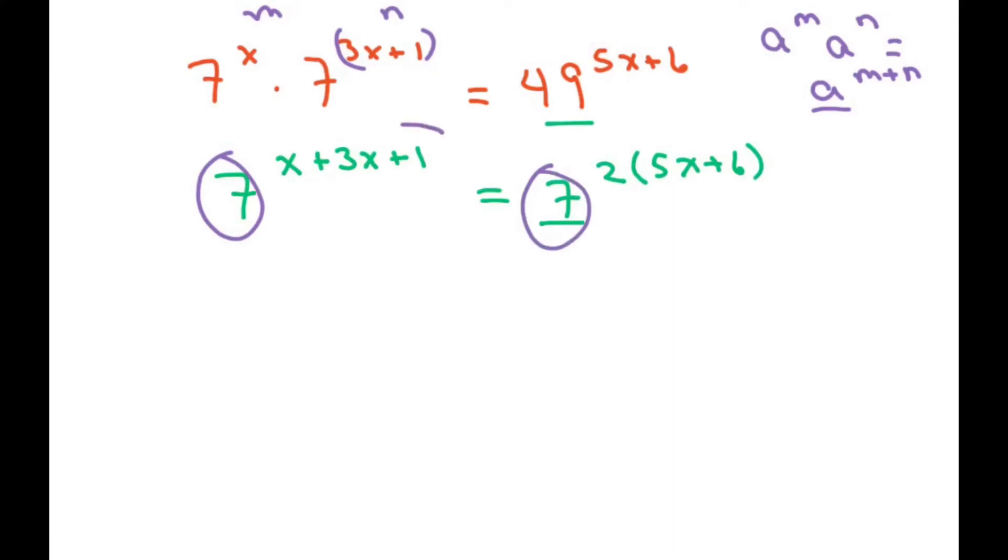all I have to do is solve for x here in your exponent. So that this part right here is going to be 4x plus 1 equals 10x plus 60.